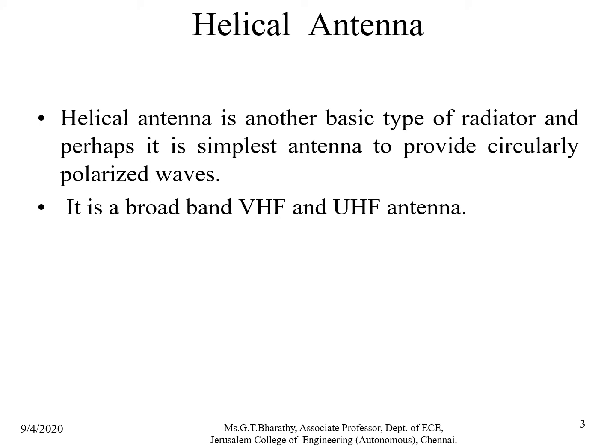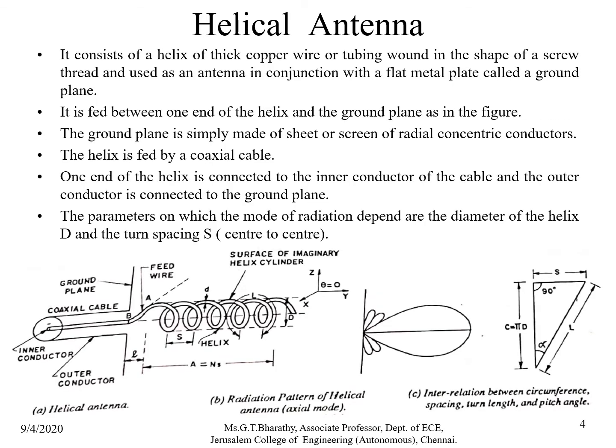Helical antennas are another basic type of radiator and the simplest antenna to provide a circularly polarized wave. They are broadband VHF and UHF antennas. The helical antenna consists of a thick copper wire wound in the shape of a screw thread. It is fed between one end of the helix and the ground plane, which is a sheet or screen of radial concentric conductor. The helix is fed by a coaxial cable — the inner conductor connects to the helix and the outer conductor connects to the ground plane.